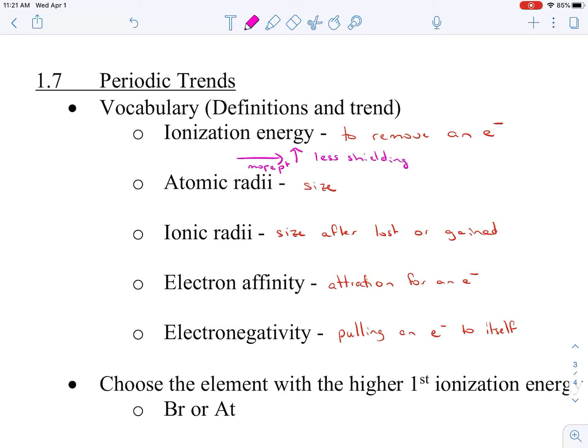We can also call that effective nuclear charge. Atomic radii increases as we go down because layers of electrons, and then it also increases as we go to the left, which is kind of not what we think, but it increases to the left and that's because we have less protons, so less poles.